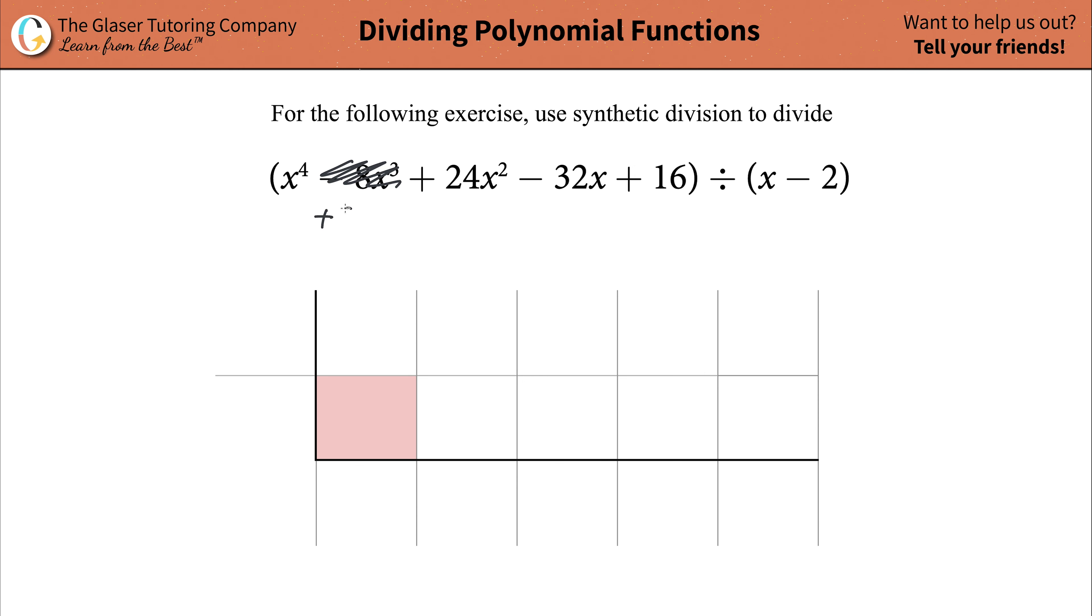What you would do is add in 0x cubed. 0 times anything is just 0, and adding 0 to something doesn't do anything. Therefore, this technique allows you to see the coefficient of that x cubed term in that case.